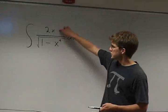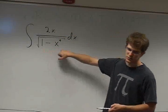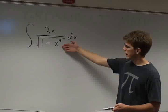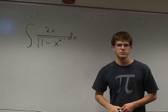We're trying to take the integral of 2x over the square root of 1 minus x to the 4th. What I see when I look at this is that we're going to need to use a substitution problem.